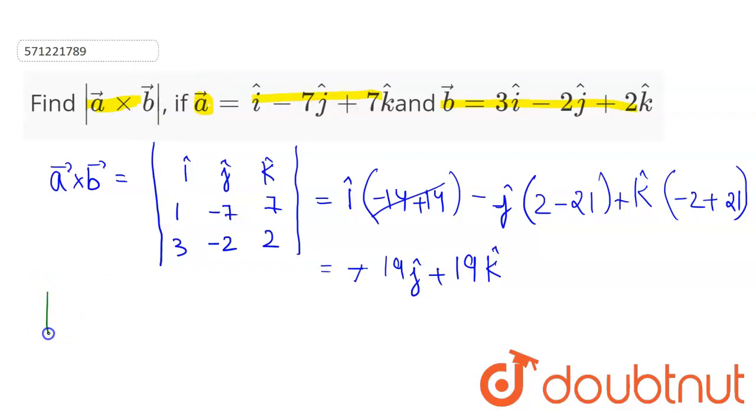Now, the magnitude of vector A cross vector B equals the square root of the sum of squares of coefficients. So this will be square root of (19 squared plus 19 squared), which equals 19 times square root of 2. This is our required magnitude, and this completes our solution.